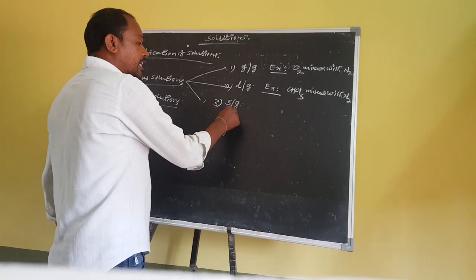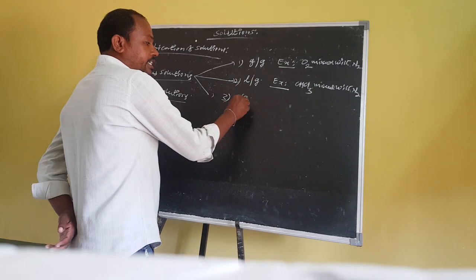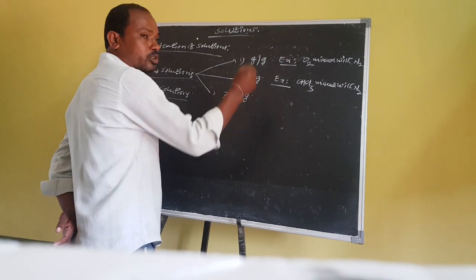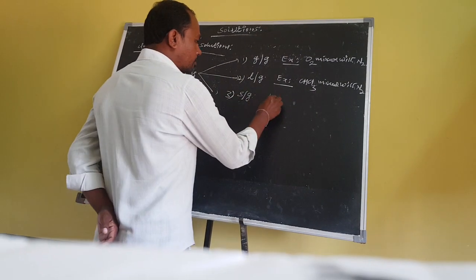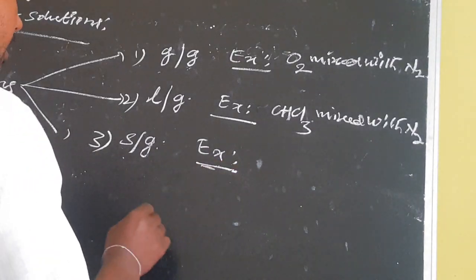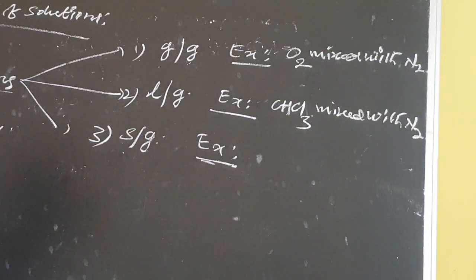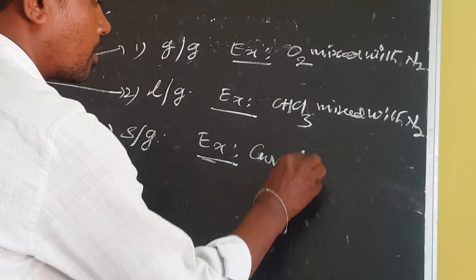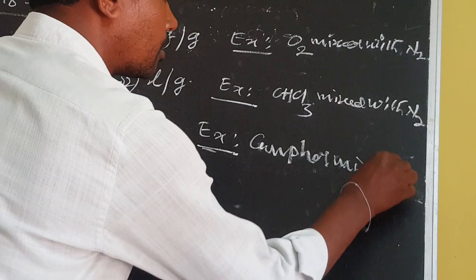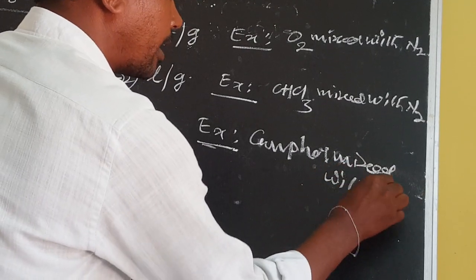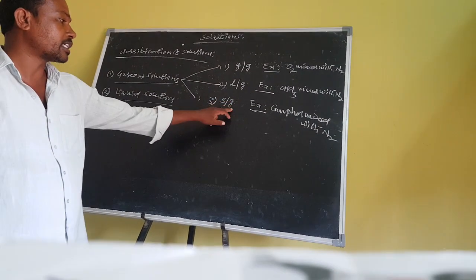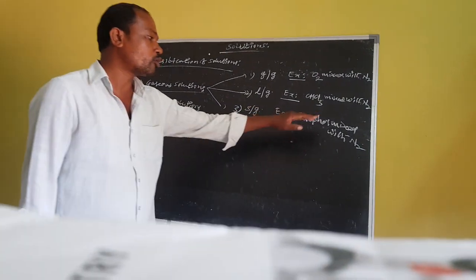Next, solid-in-gas type solutions: in this type, gas acts as a solvent and solid acts as a solute. Example: camphor mixed with nitrogen. This is the example for solid-in-gas type solutions.